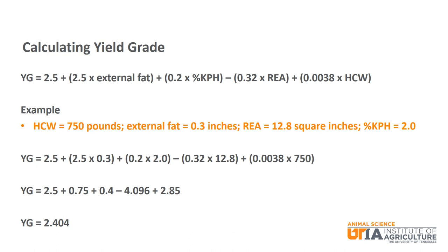If we use an example calf with a hot carcass weight of 750 pounds, external fat of 0.3 inches, a rib eye area of 12.8 square inches, and a percent KPH of 2.0, we can calculate the yield grade. By plugging in those values into the formula, we get: yield grade = 2.5 + 0.75 + 0.4 − 4.096 + 2.85, for a final answer of 2.404. This could be rounded to a final yield grade of 2.4.